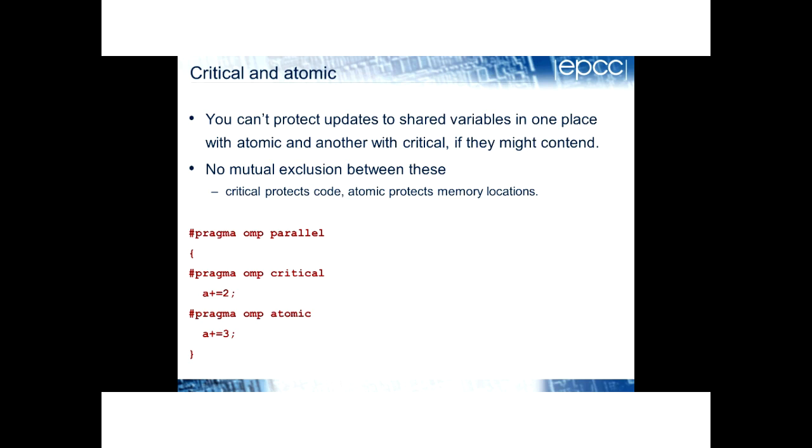A note about critical and atomic: you can't protect updates to shared variables in one place with atomic and in another place with critical if they might contend with each other — there is no mutual exclusion guarantee between them. Critical protects code regions; atomic protects memory locations. The compiler has no way of knowing which memory locations are being protected by critical, so one thread could be in the critical region while another is in the atomic at the same time, causing a race.